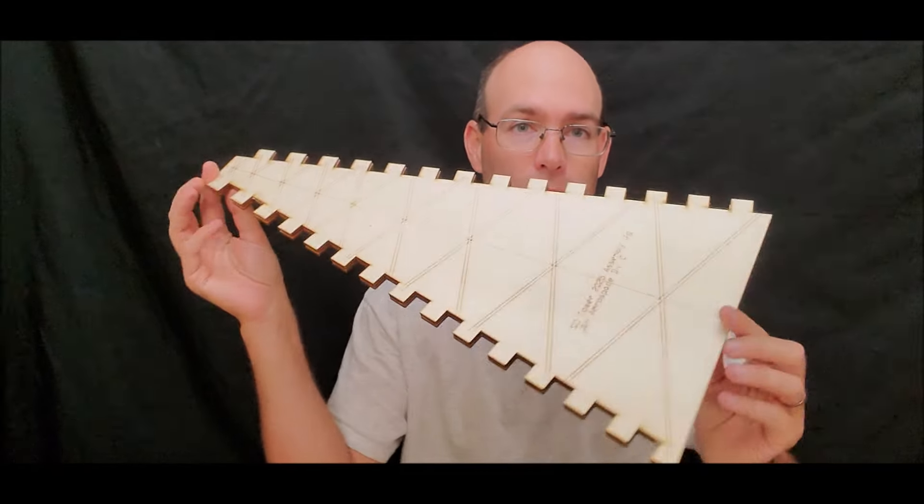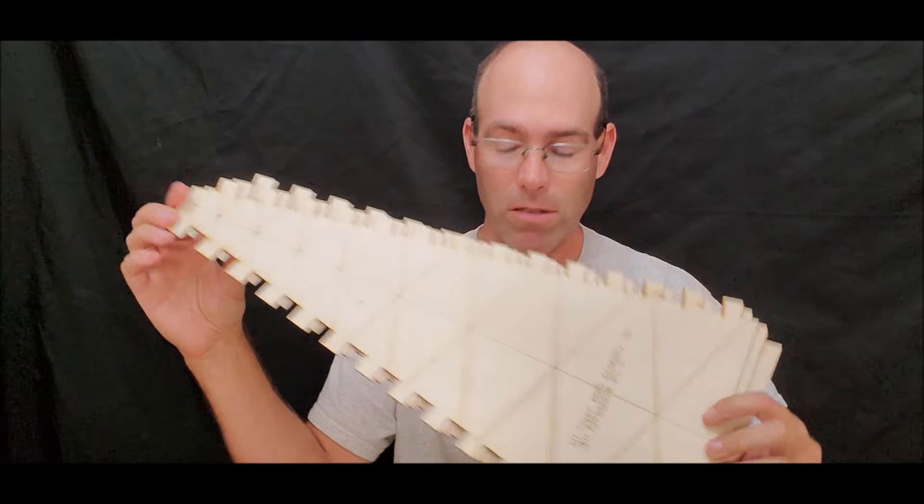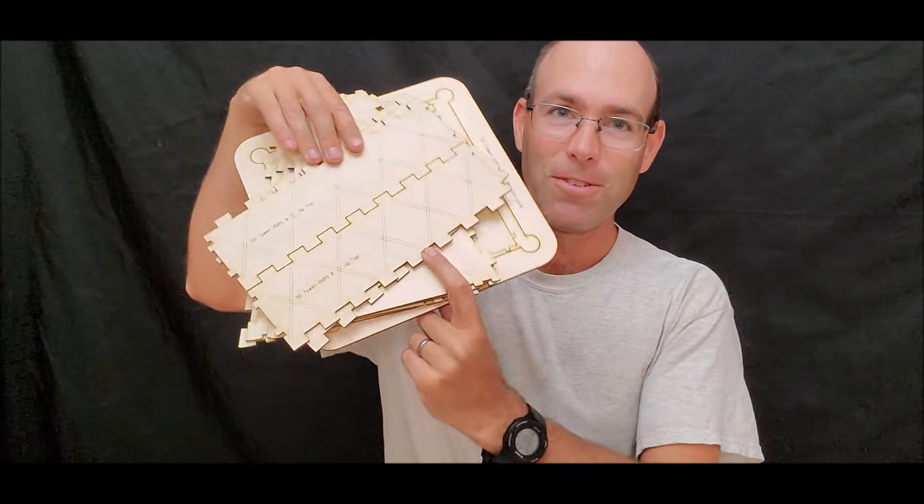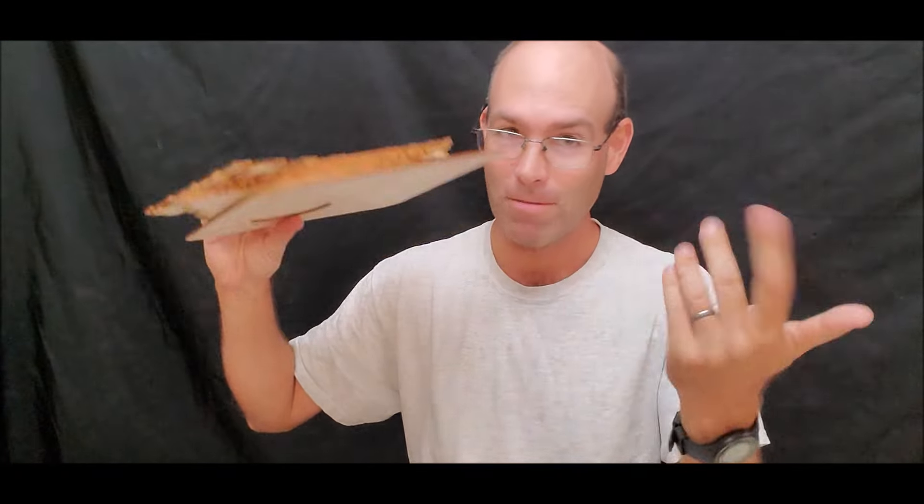So first we're going to show you how to assemble a towers jig from our Division C kit as well as from our Division B kit. If you can't tell, Division B is more complicated this year than Division C. Why? You tell me. All right, so with that let's go ahead and get started.